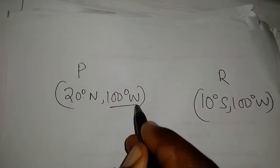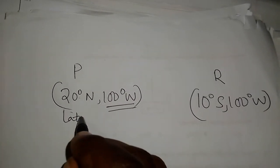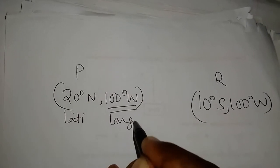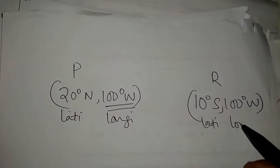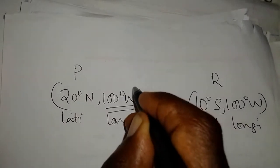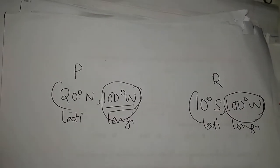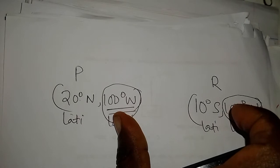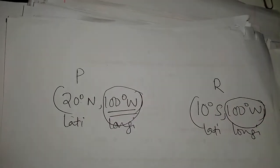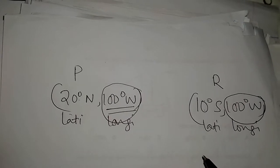If you look at this, the first part is the latitude and the second part is the longitude. The longitude here is 100 degrees west. The longitude here is 100 degrees west. That obviously tells you these two points are found on the same longitude. So if they are found on the same longitude, then they are obviously found on a great circle.